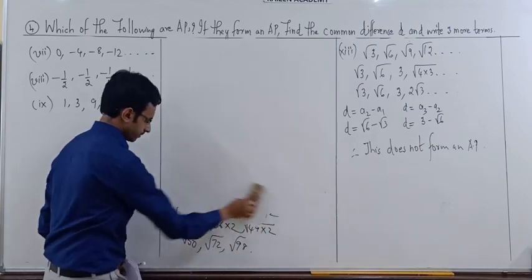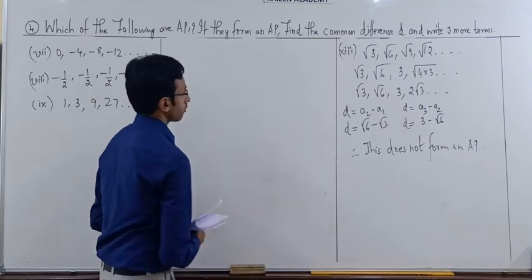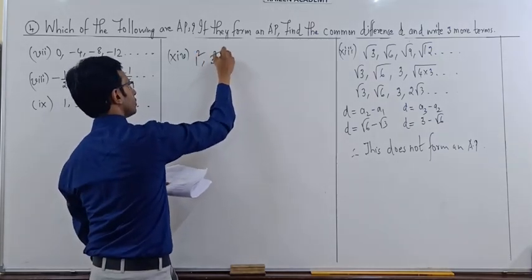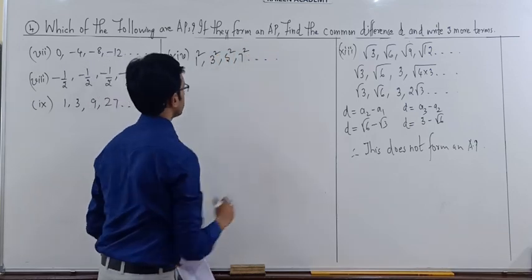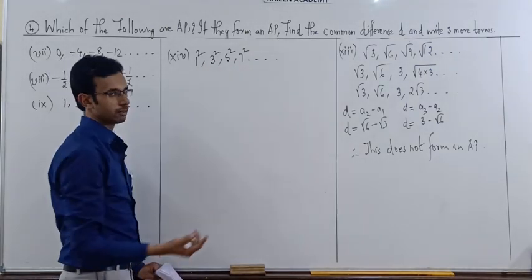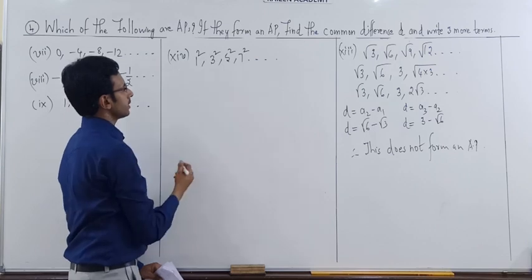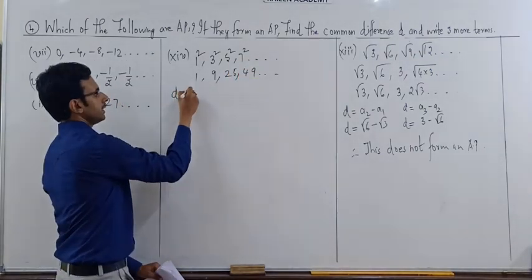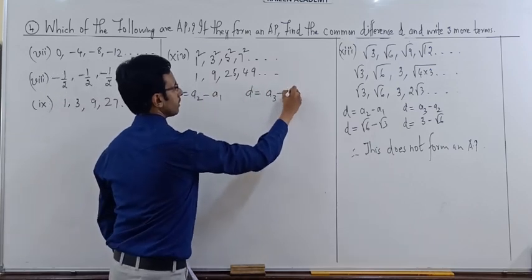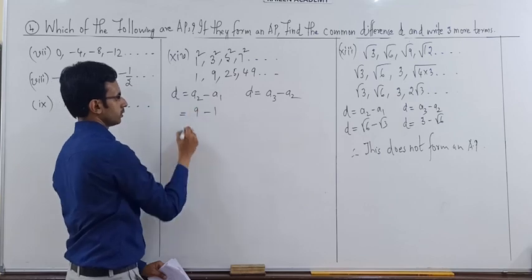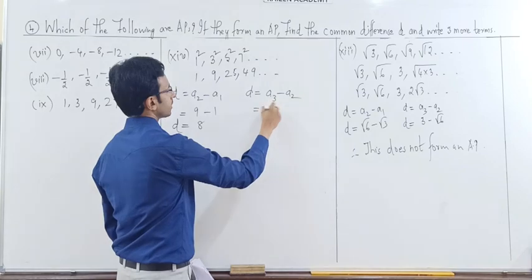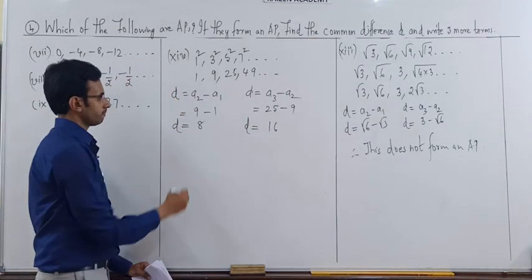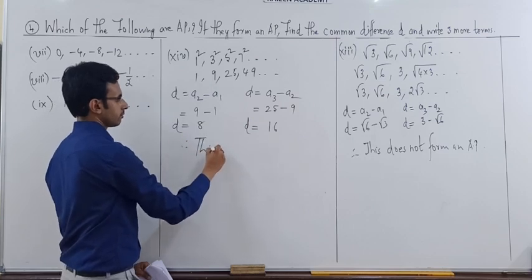Problem number 14: 1², 3², 5², 7². It may look like an AP since 1, 3, 5, 7 are odd numbers with common difference 2, but the squares change things. Calculate the actual values: 1² = 1, 3² = 9, 5² = 25, 7² = 49. Check d = a2 − a1 = 9 − 1 = 8. Then d = a3 − a2 = 25 − 9 = 16. The differences 8 and 16 are not the same — in fact they are multiples of 8 — so this does not form an arithmetic progression.